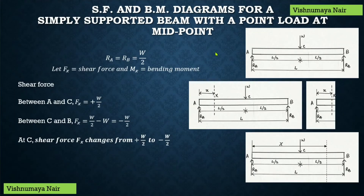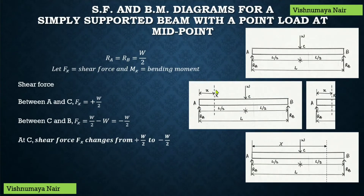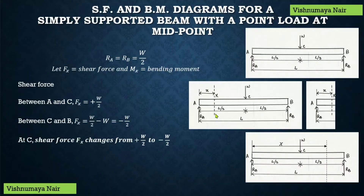Let's now find out the shear force and bending moment values acting along the length of the beam. We have a simply supported beam with a point load acting at the midpoint, and Ra = Rb = W/2. Let's consider a section X at a distance of x meters from end A, where Fx is the shear force and Mx is the bending moment. To find these values, we consider either the left or right portion of the section.